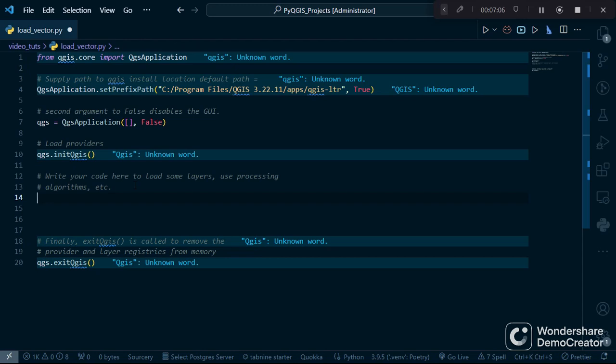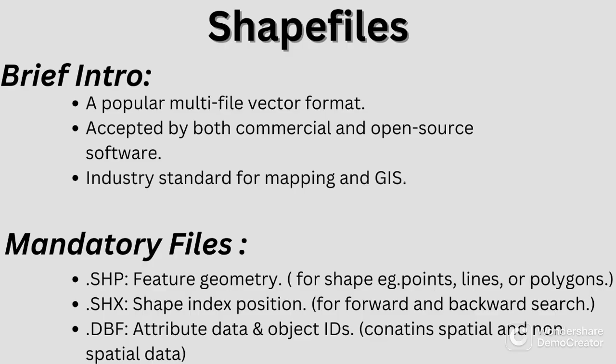Before we load the shapefile, we need to understand a bit about shapefiles. A shapefile is a popular multi-file vector format accepted by both commercial and open source software and has become the industry standard. In a shapefile, there are usually three important and mandatory files: the .shp file, which contains the shape of our layer — whether the layer is a point, line or polygon; the .shx file, which is the shape index position allowing for forward and backwards search; and the .dbf file, which contains the attribute data of our layer.